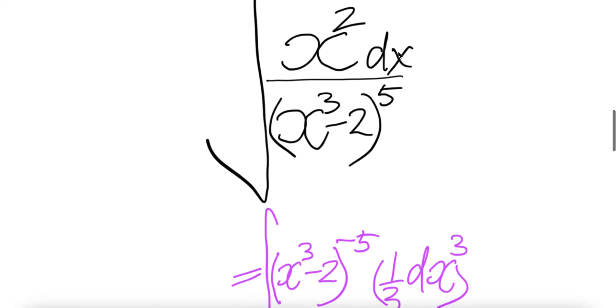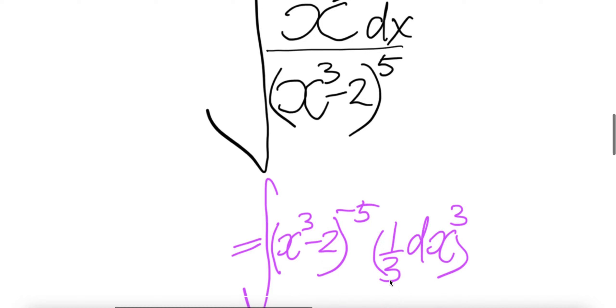Now let us push x² into dx. The derivative of x³ is 3, which comes down and cancels to give one third, and then three minus one gives x² dx.